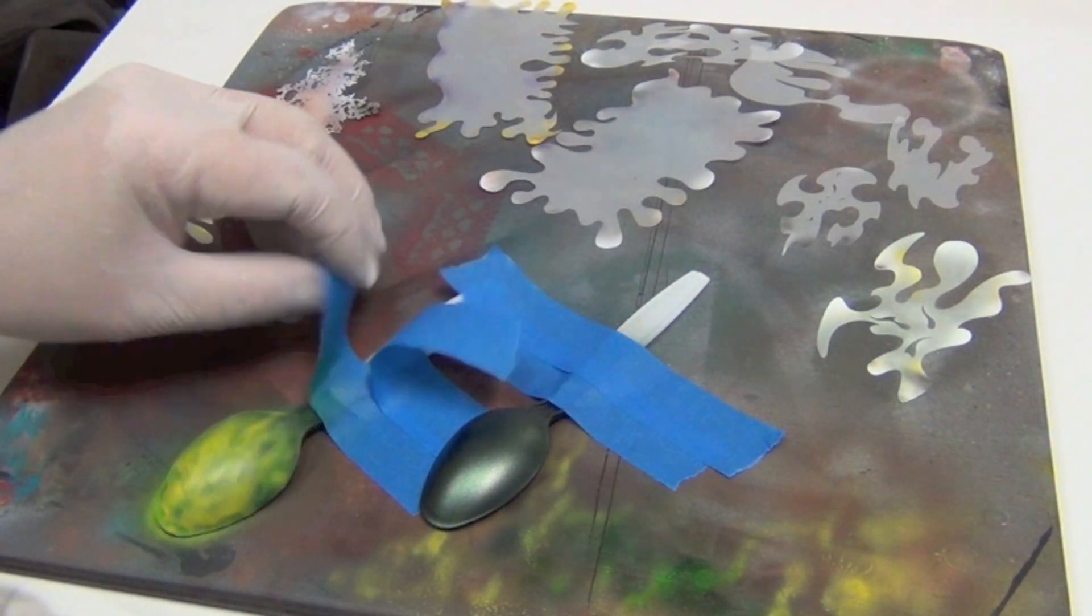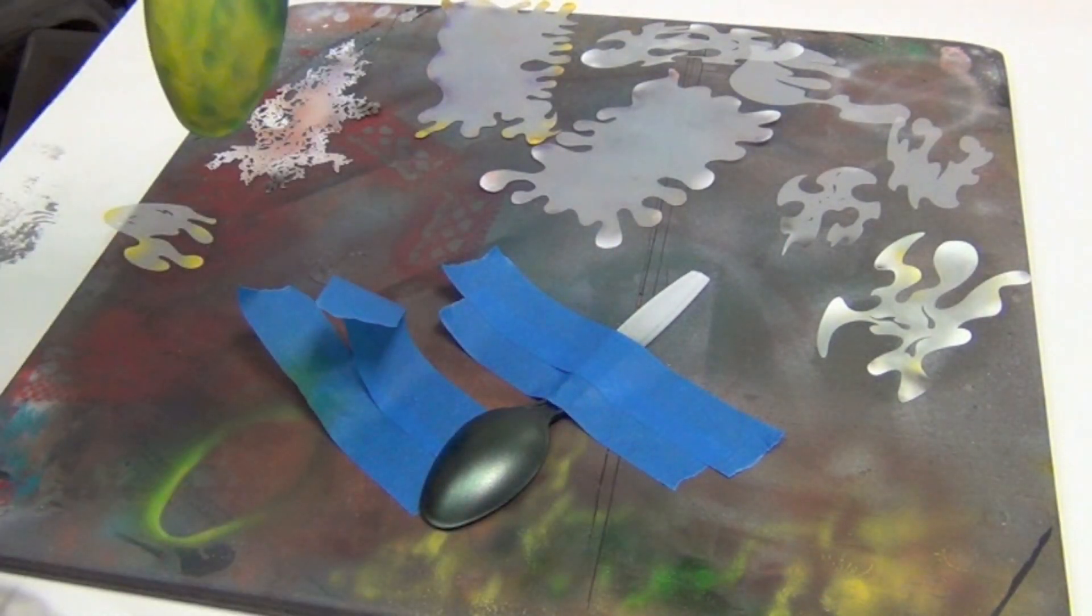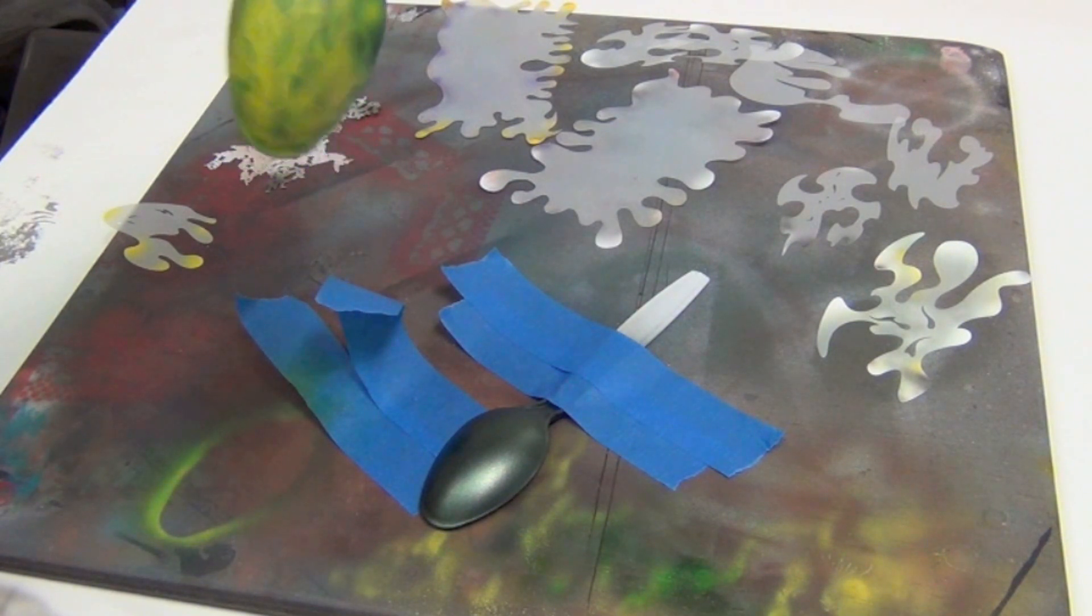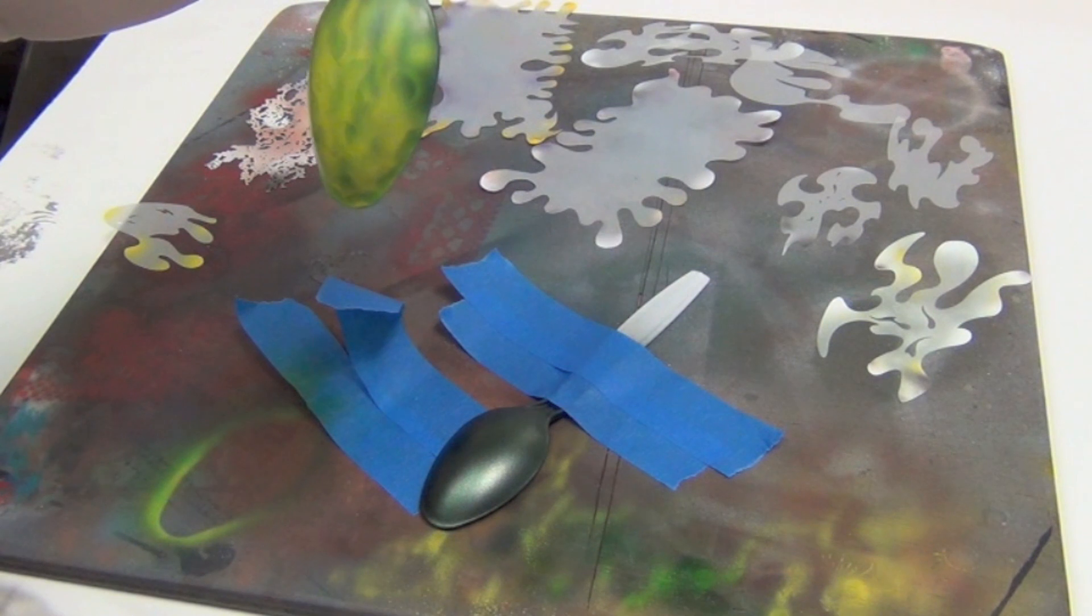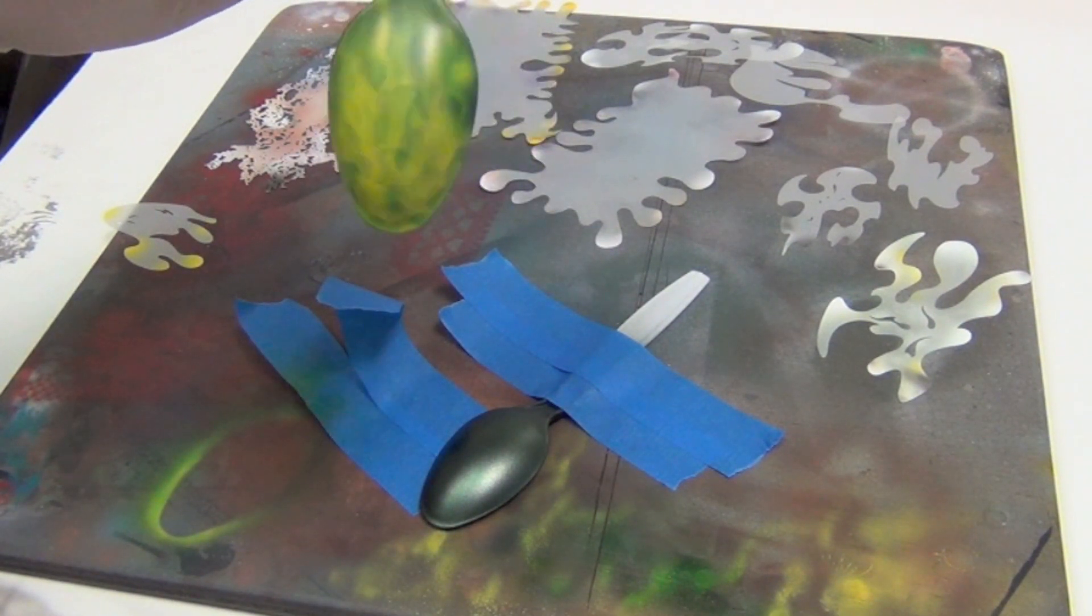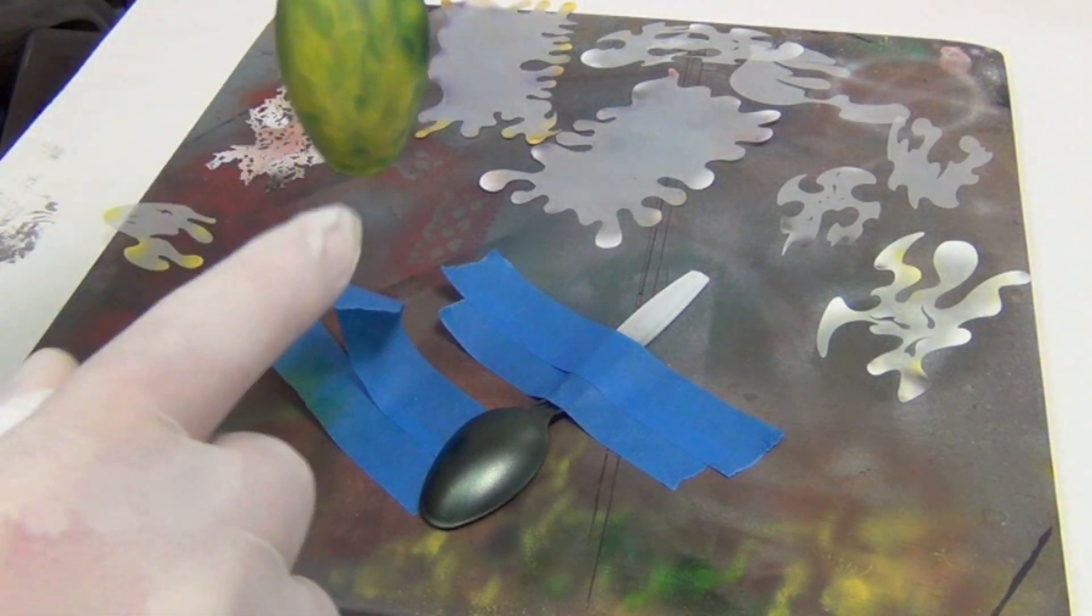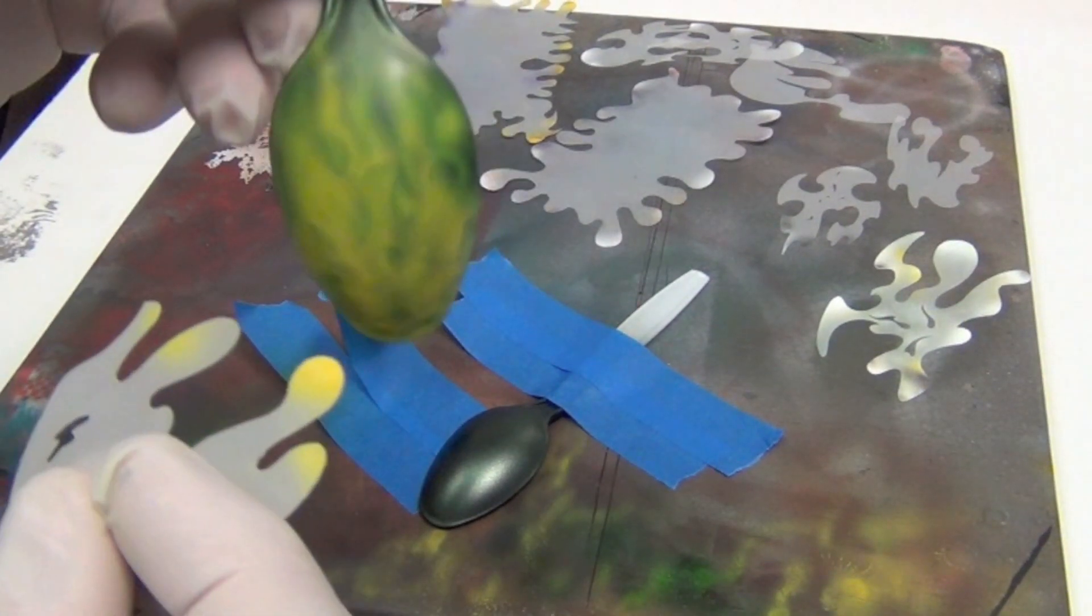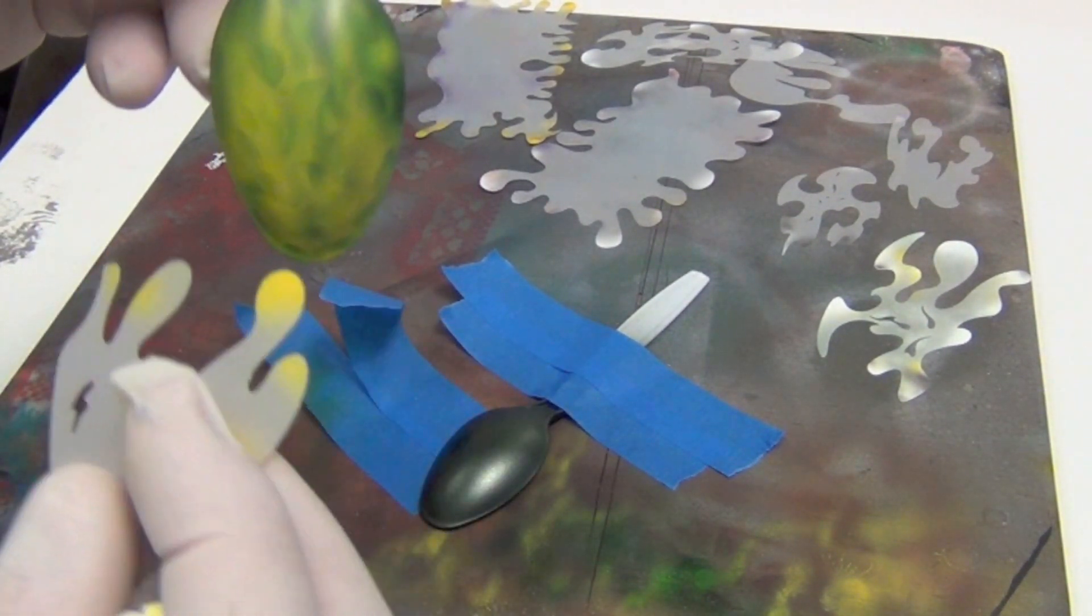I taped down the spoons so they wouldn't move. You begin to see some of it. It's just a matter of adding a few layers, pushing it back with the organic green candy, and then bringing out some of the highlights with these things.